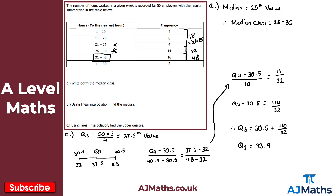Q3 is approximately 33.9, which is our estimate for the upper quartile. You can give your answer a quick common sense check — it should fall within the class interval 31 to 40, and 33.9 does. That's our answer for part C, and that brings us to the end of this video on interpolation.